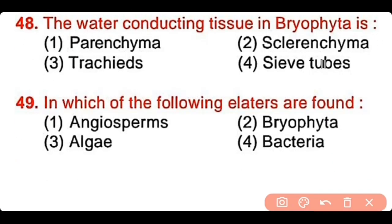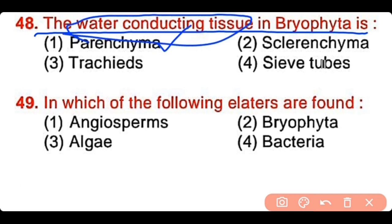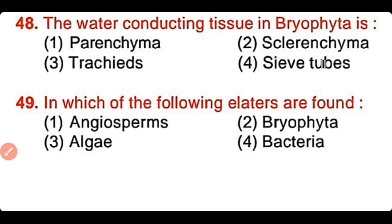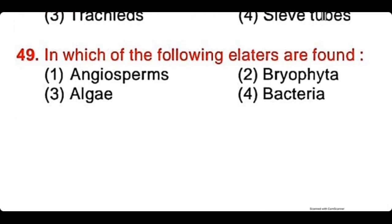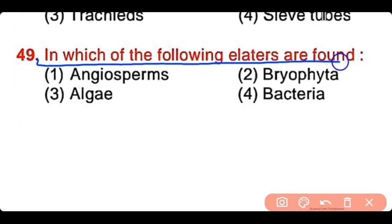Question number 48: The water-conducting tissue in bryophytes is parenchyma, sclerenchyma, tracheids, or sieve tubes. The correct answer is option 1. Parenchyma is the water-conducting tissue present in bryophytes. Question number 49: In which of the following are elaters found? Angiosperm, Bryophyta, algae, or bacteria. The correct answer is option 2. Bryophytes have elaters that help in the dispersal of spores.